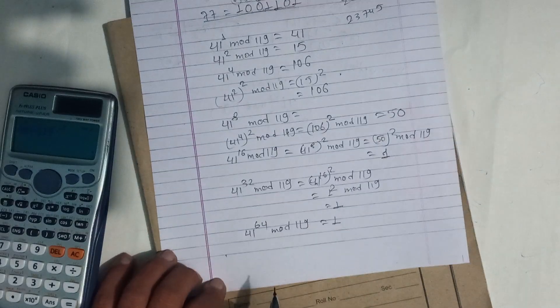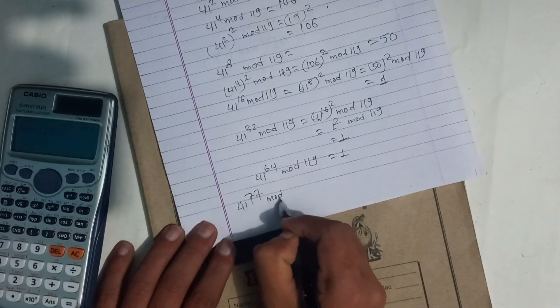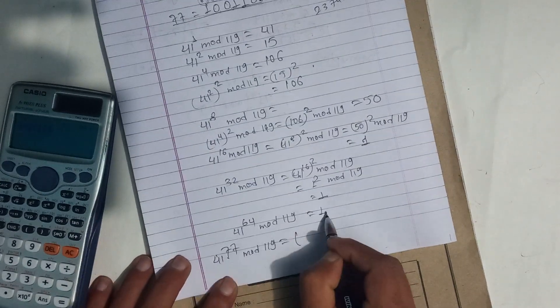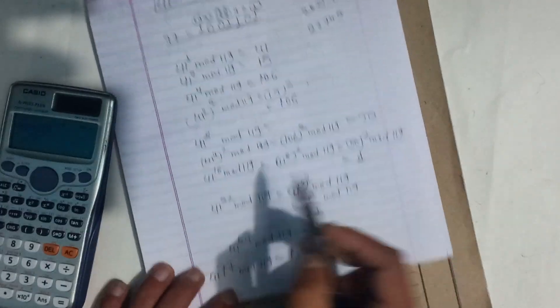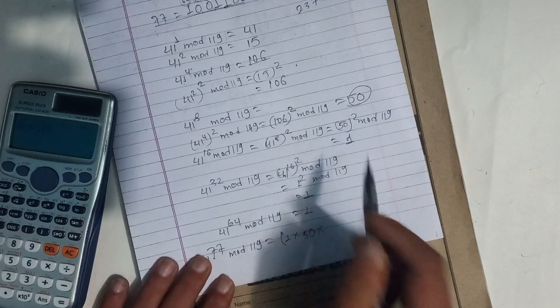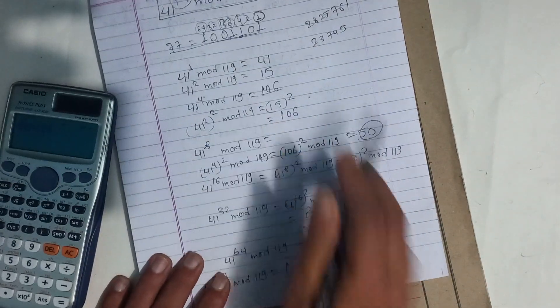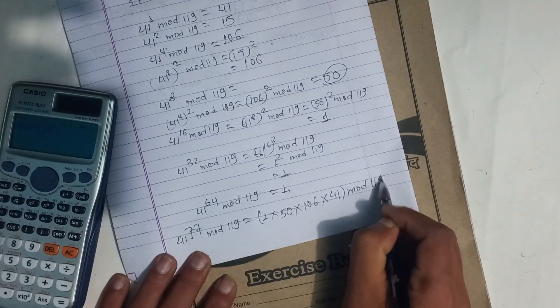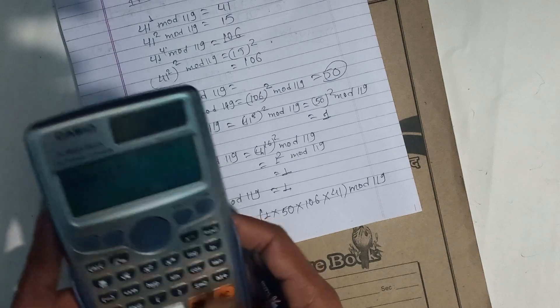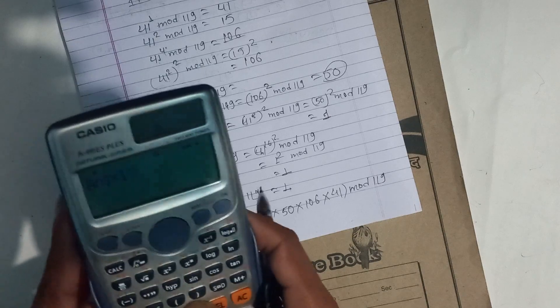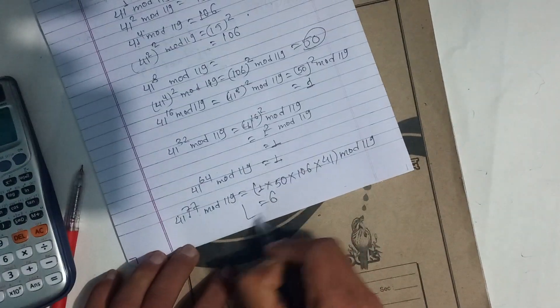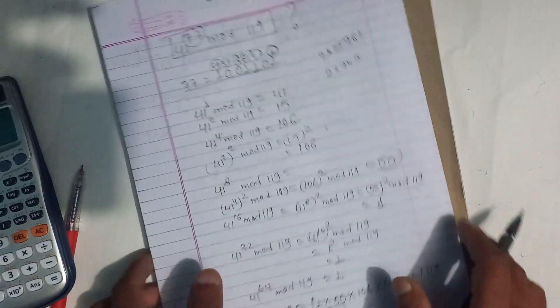Now the final calculation: what we need is 41 to power 77 mod 119. For 77, we need 64, 8, 4, and 1. So 64 gives 1, times 8 gives 50, times 4 gives 106, times 1 gives 41. This equals minus 26 into 119. Perfect, this is 6. This is 6, okay good. This is how we calculate power modulus. Thank you.